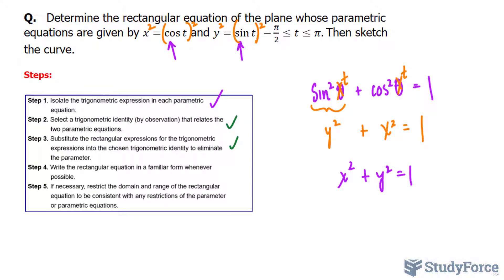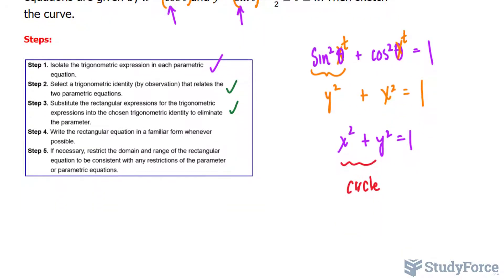Write the rectangular expression in a familiar form whenever possible. So what they're saying here is that if you cannot recognize what type of equation this is, make sure you rearrange it so that it is recognizable. Now this one's already recognizable to me. We have x² + y² which means that it is a circle and it's a circle that is centered at the origin.